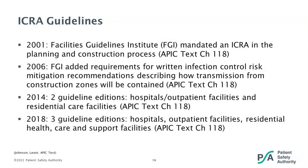Then in 2006, requirements were added for written infection control mitigation recommendations which describe how transmission from construction zones will be contained. To make it more facility-specific, in 2014, FGI published two editions — one for hospital and outpatient facilities and a second for residential care facilities. They split it further in 2018 with three editions: one for hospitals, another for outpatient facilities, and a third for residential health care facilities.